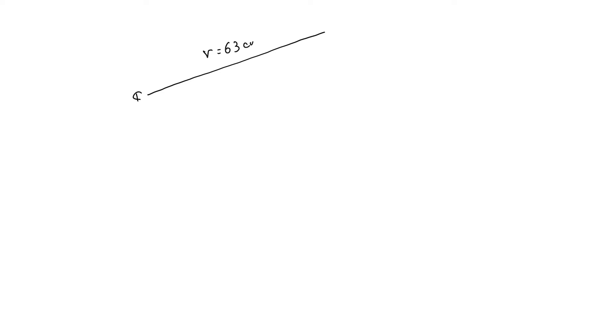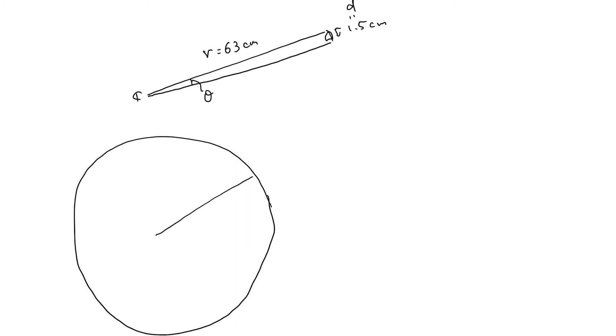I have measured the length between my eye and my fingers. This is R equals 63cm. The size of the finger nail is 1.5cm. The angular size corresponds to this angle. If you consider a circle with radius R and angle theta, this arc length is D. Then you can find the relation between the three quantities R, D, and theta: D equals R times theta. So theta is calculated as D over R.